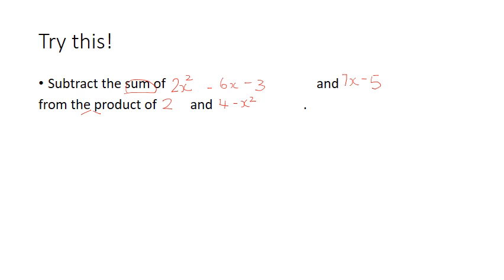And following that, we need to carry on with the product of 2 and 4 minus x squared. Lastly, we will subtract one from the other.